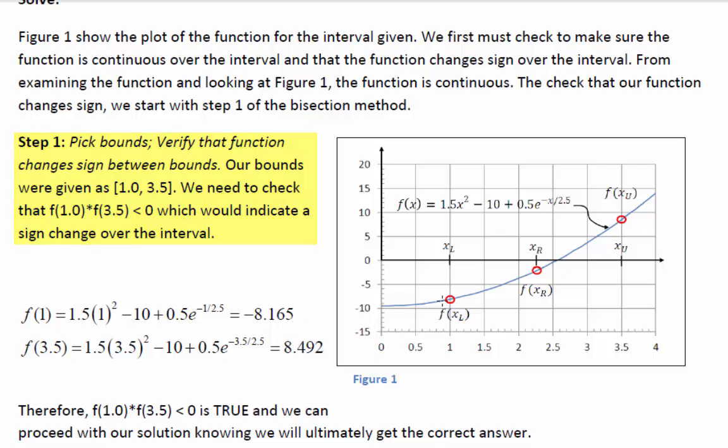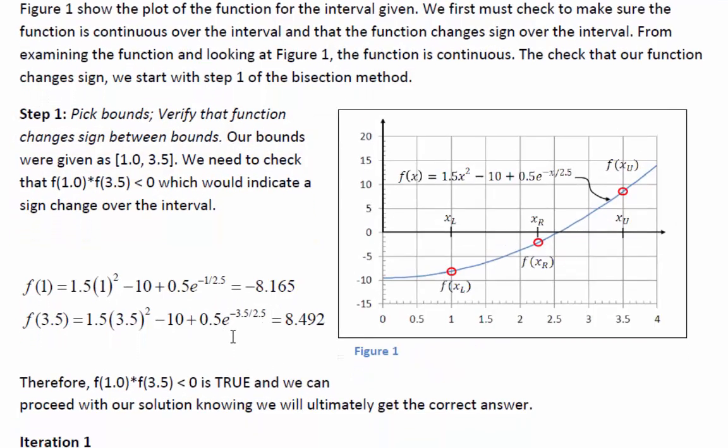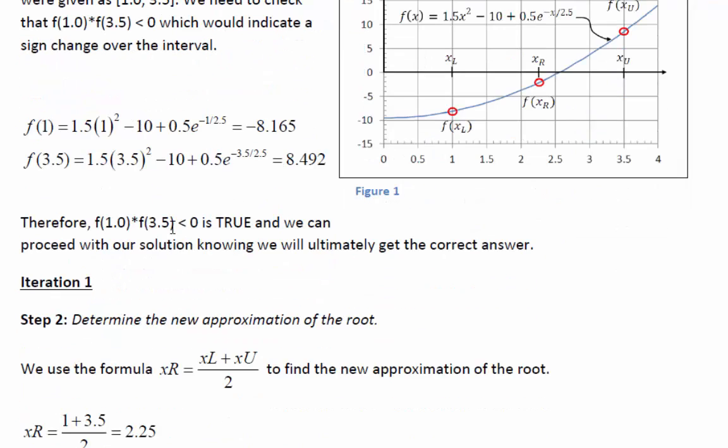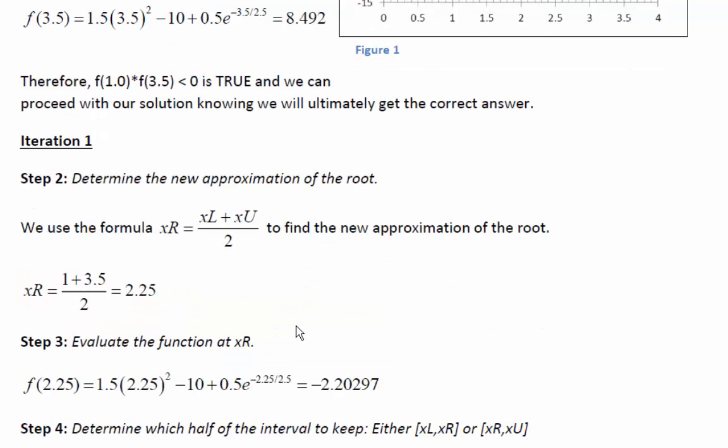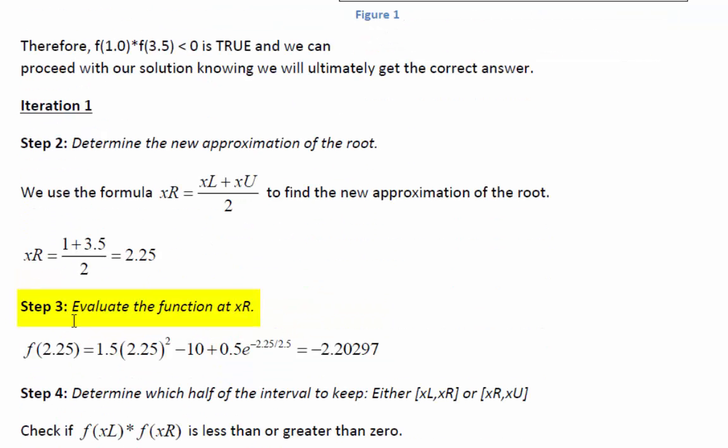So one is positive, one is negative. It's continuous, so we have a root somewhere in between those two. We can proceed with step two. We would approximate our root by taking the bounds, averaging them, we get 2.25. Then we evaluate our function at XR. So F at 2.25 gives you -2.203.